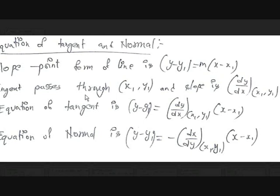The tangent passes through (x1, y1) and has slope dy/dx at (x1, y1). Substituting into the point-slope form gives the equation of the tangent: y - y1 = (dy/dx at x1, y1) × (x - x1).